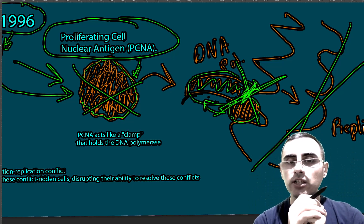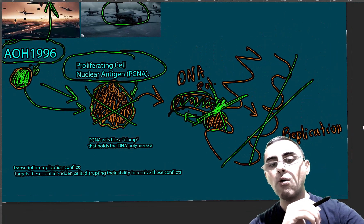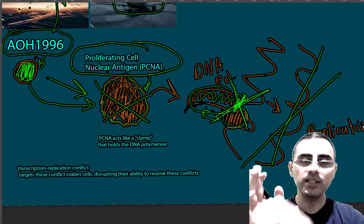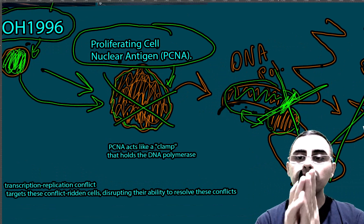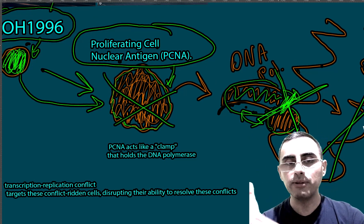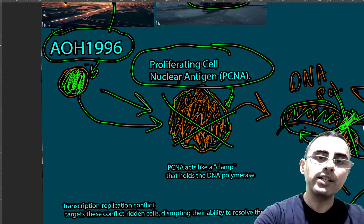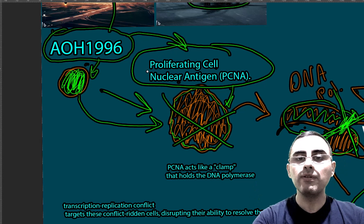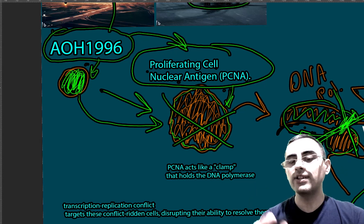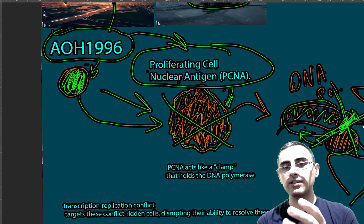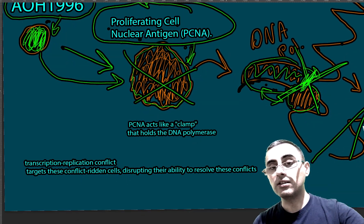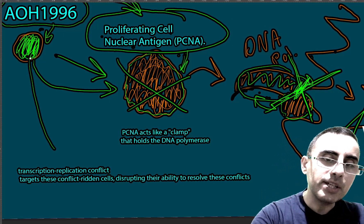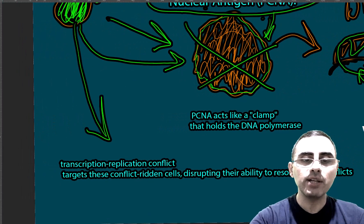Because replication is blocked, no new DNA can be created from the template. This whole process of DNA duplication is disrupted. Critically, this process is active in cancer cells but not in normal cells. While normal cells also have DNA replication, AOH-1996 specifically targets a variant of PCNA that is specific to cancer cells — not normal cells — so it affects cancer cells without disrupting the normal cell cycle.